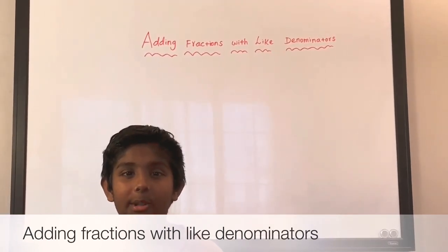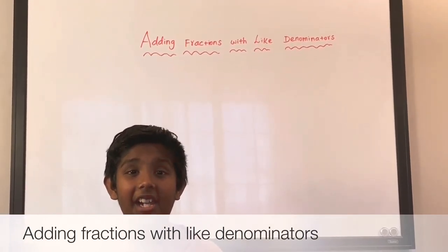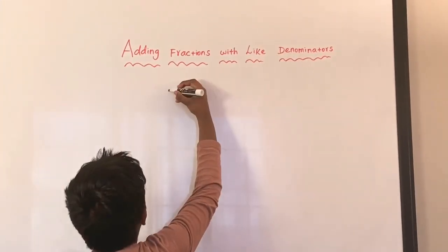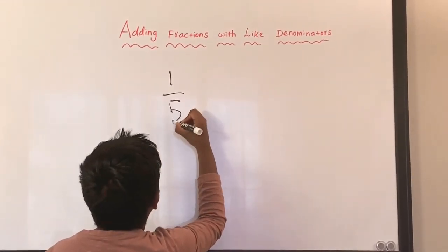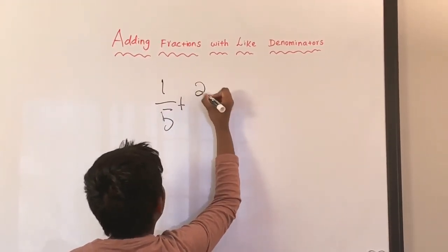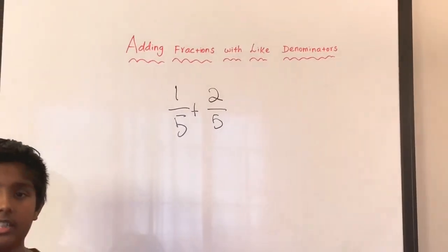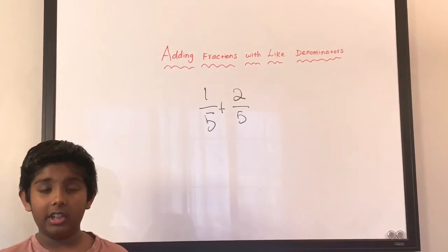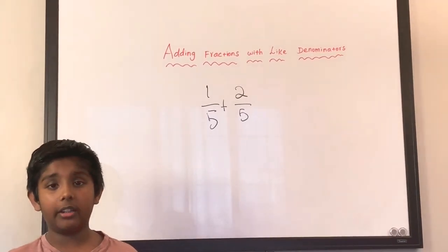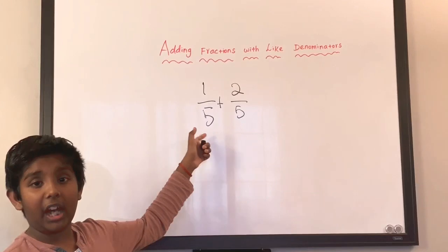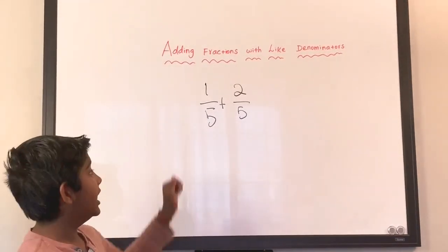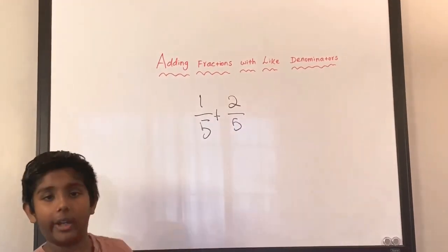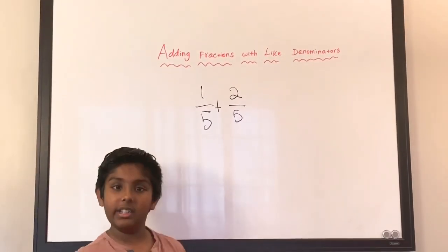Today I'm going to be teaching adding fractions with like denominators. Let's get started. Before we do this example, I'll tell you something: when adding or subtracting fractions, we should always check if we have the same denominator in both fractions. Like this — 1 over 5 and 2 over 5 — we have the same denominators, so that's going to be easier.